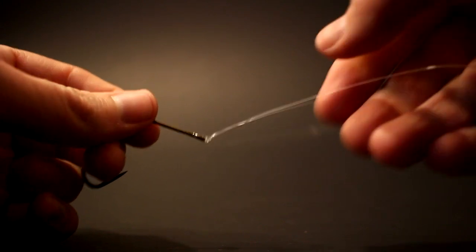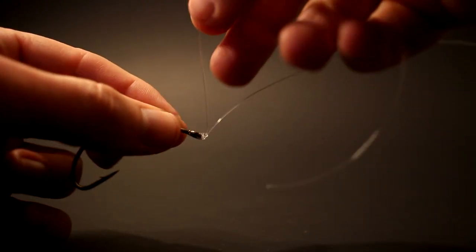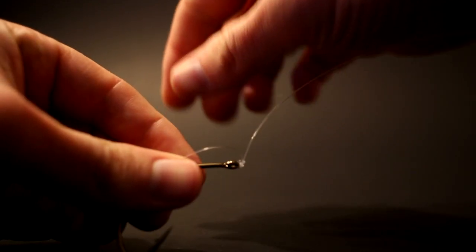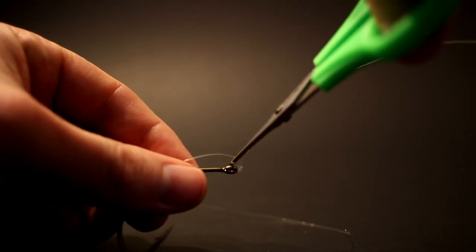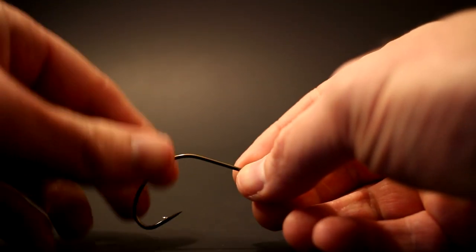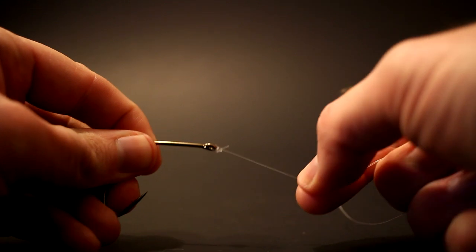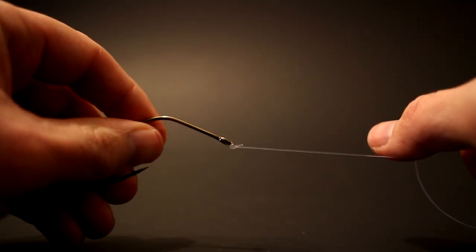After that, carefully cut the tag right here. I always leave just a little bit of room in case, even though you pulled down really tight, just in case there's a little bit more give there. That way it doesn't come undone.